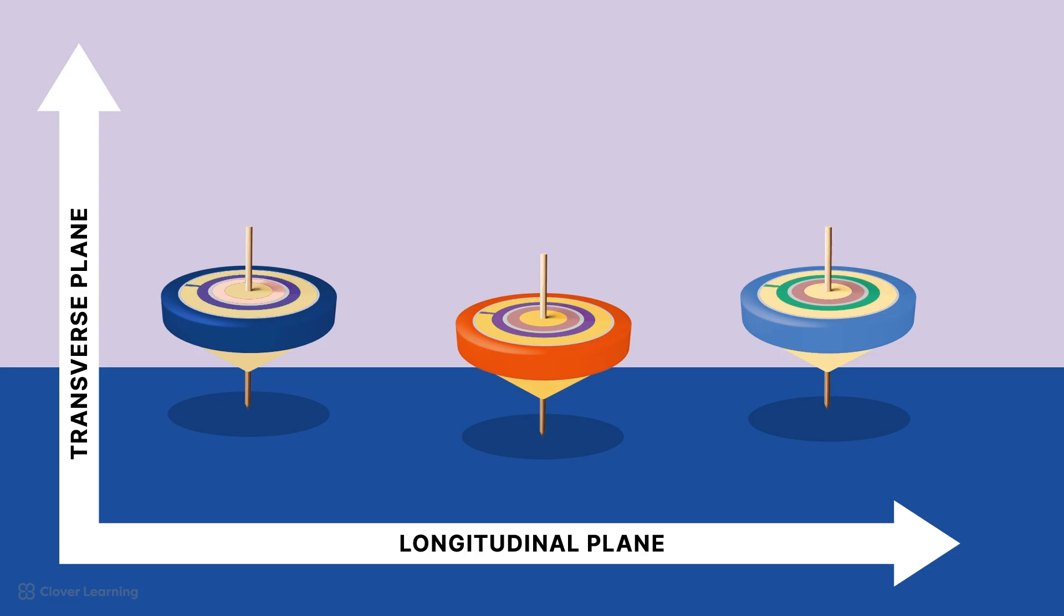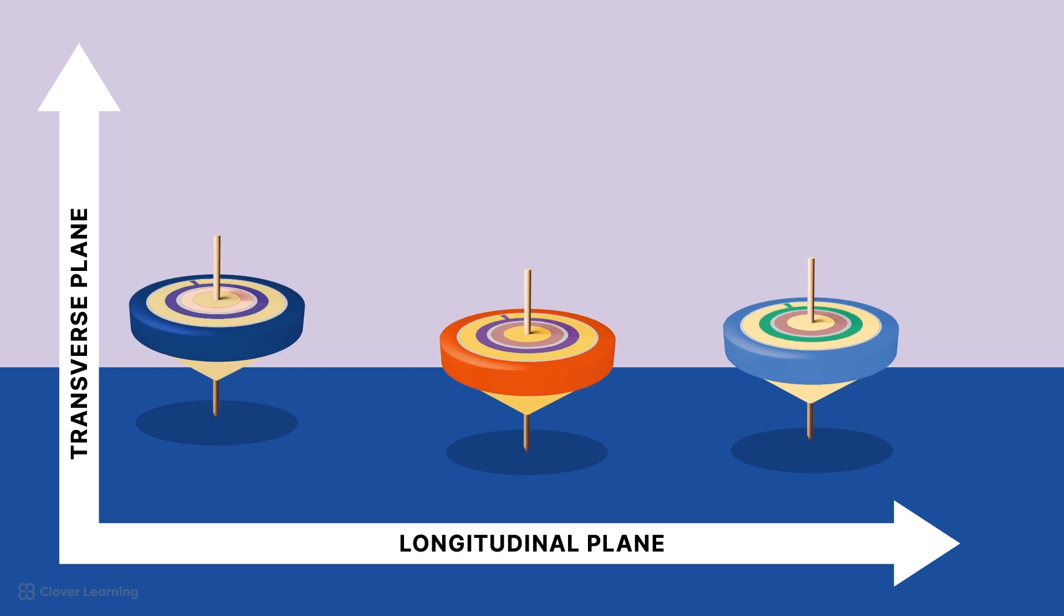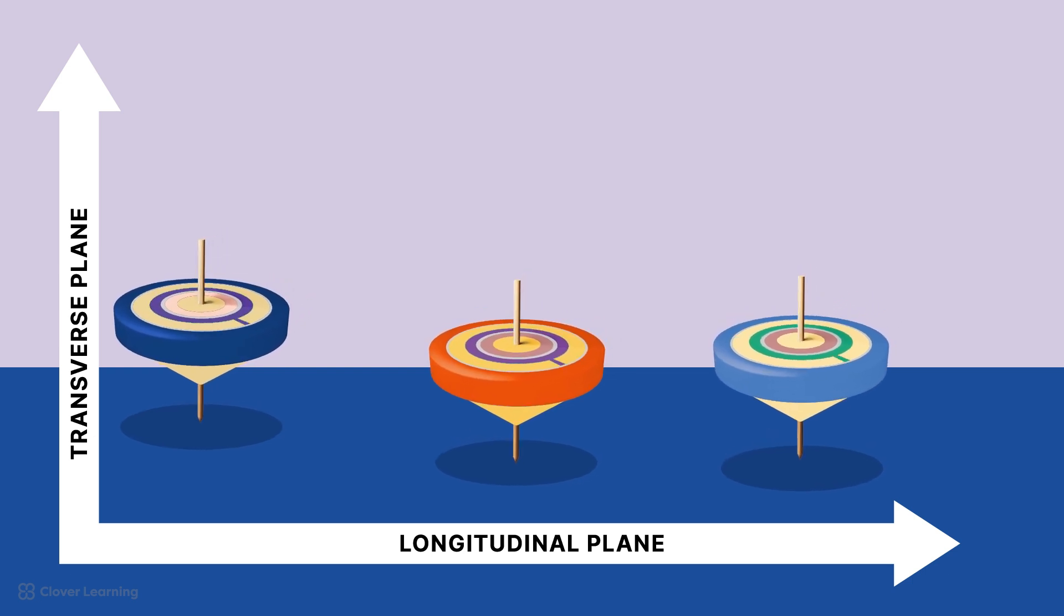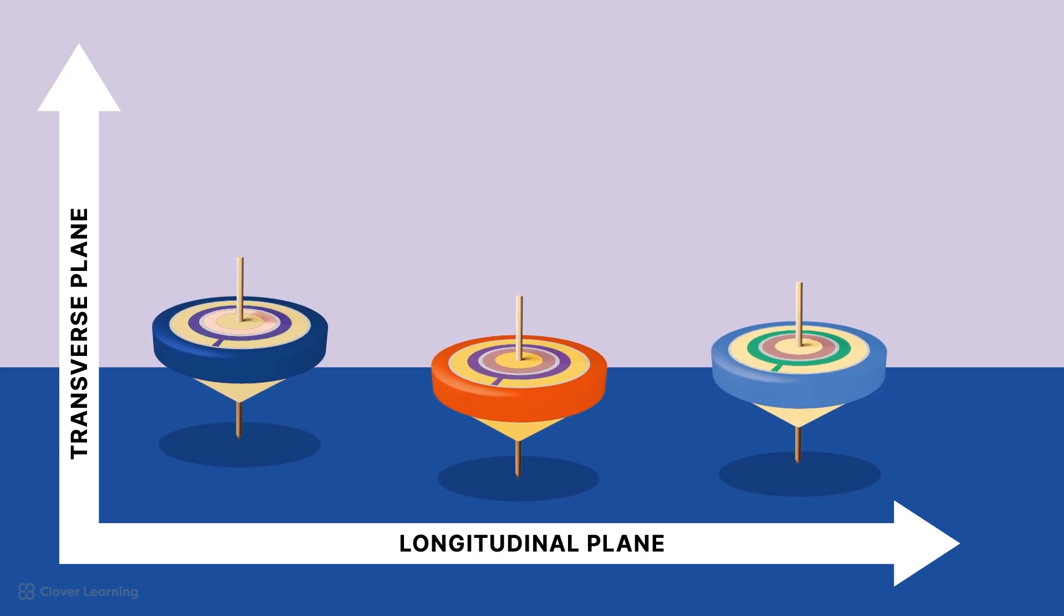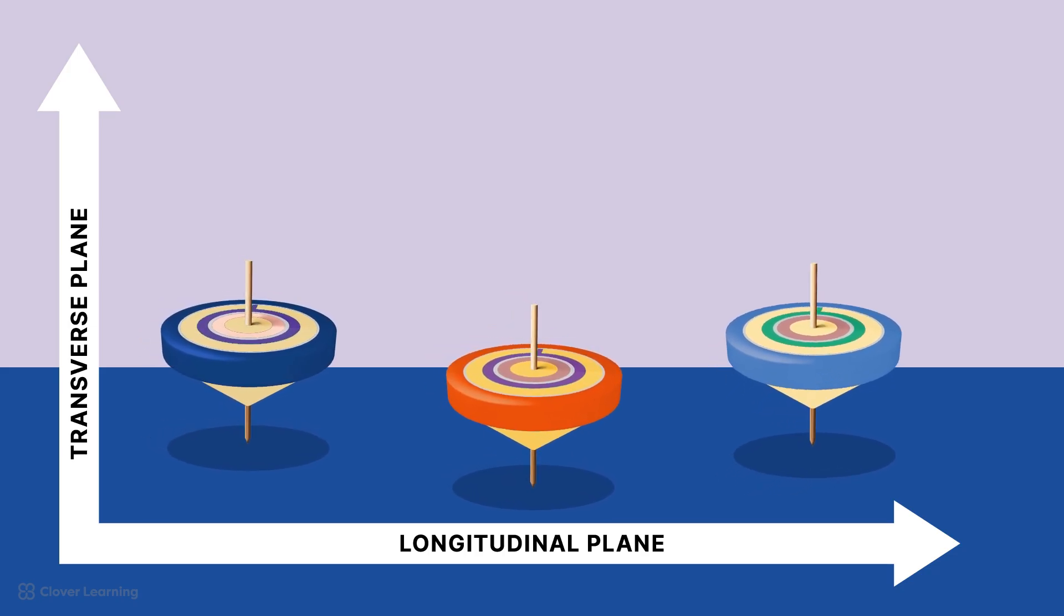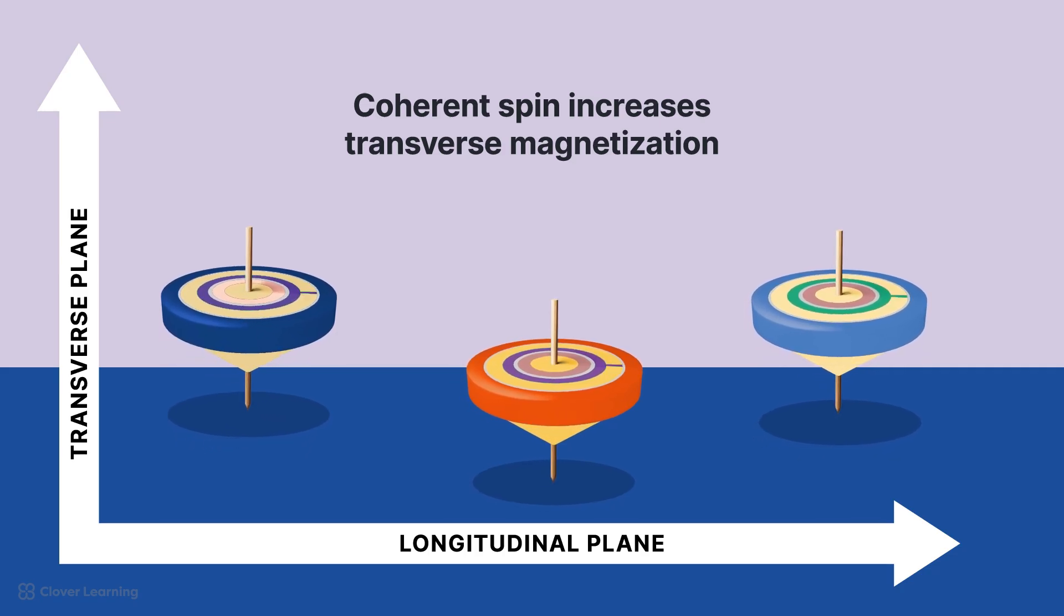To consider T2 decay or spin-spin relaxation, picture a table filled with tops. The table is the longitudinal plane, and when you have a top spinning upright at a 90-degree angle, it is in the transverse plane. When you spin the tops, you're applying energy to them, like the RF pulse does to the hydrogen nuclei in MRI. And for a period of time, the tops are all spinning, more or less, in sync. This coherent spin increases their transverse magnetization.